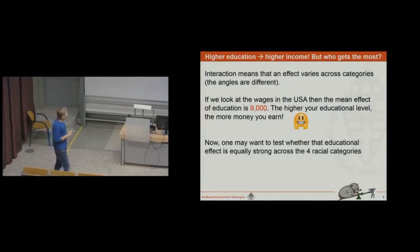But now you say okay, is that educational effect of nine grand equal across the four racial categories? Because we suspect that the educational level might be different for the black population and the Hispanic population. It might be that it is lower. There are many reasons to expect this. So it seems not fair, right? You have the same educational level but you earn less because you're from a different racial category. The big question is how do we test whether that is true? Whether the effect of education differs across the four categories.